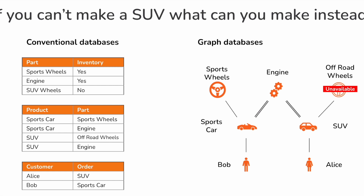But it's not hard for a graph database. The graph starts at the part that's unavailable — the SUV wheels — and traces along the links down to the cars it can no longer build because they rely on those off-road wheels. It then traces out to find all the parts it was going to use to build those SUVs and has in inventory — shown here as the engine — and traces down to see what other cars it can make with those parts. It then traces back up to see the parts it would need to order, so it can find the set of cars it could build with the fewest changes, and then down to Bob to find the car orders it can sell.